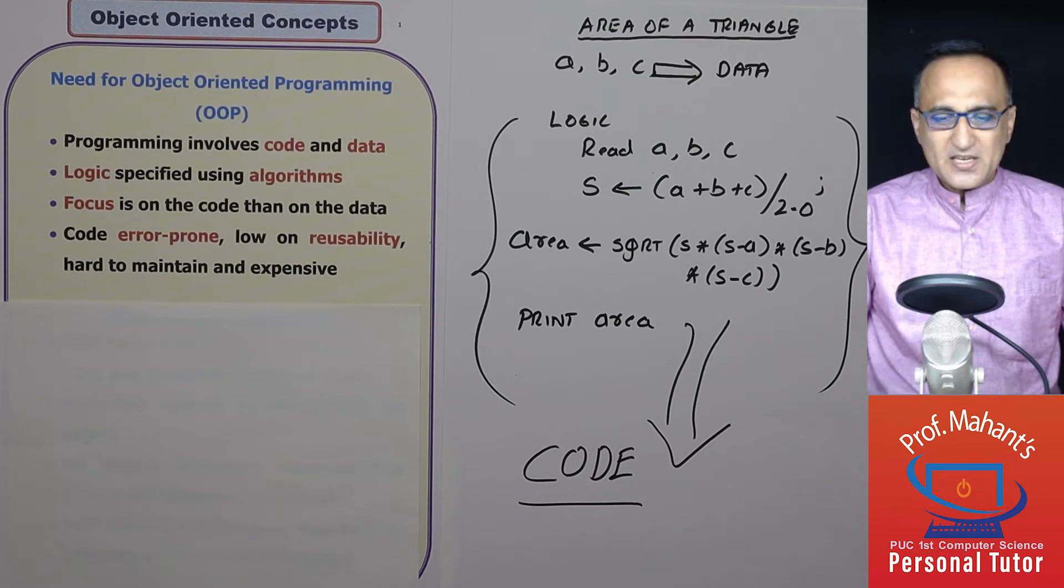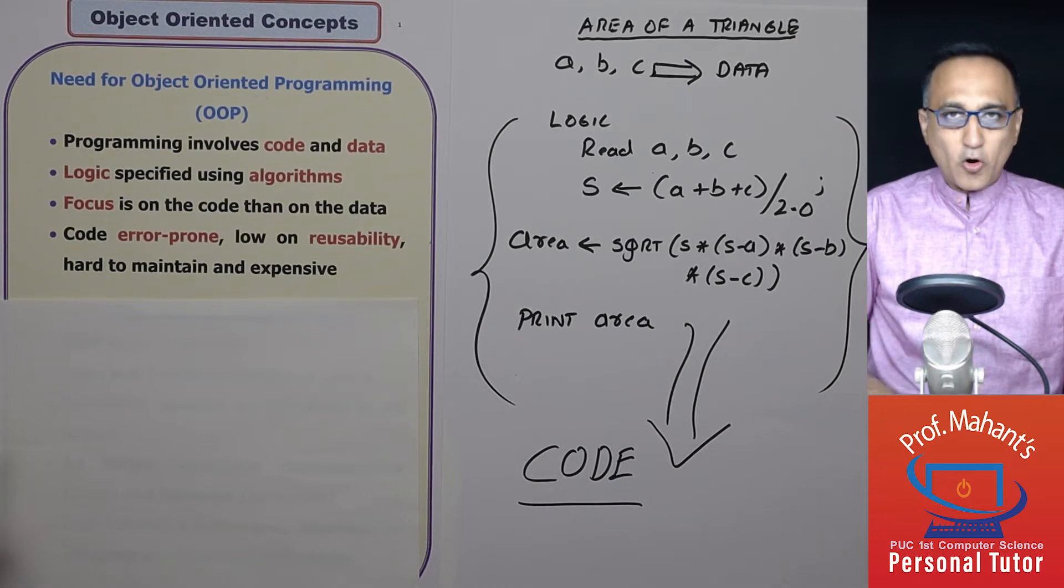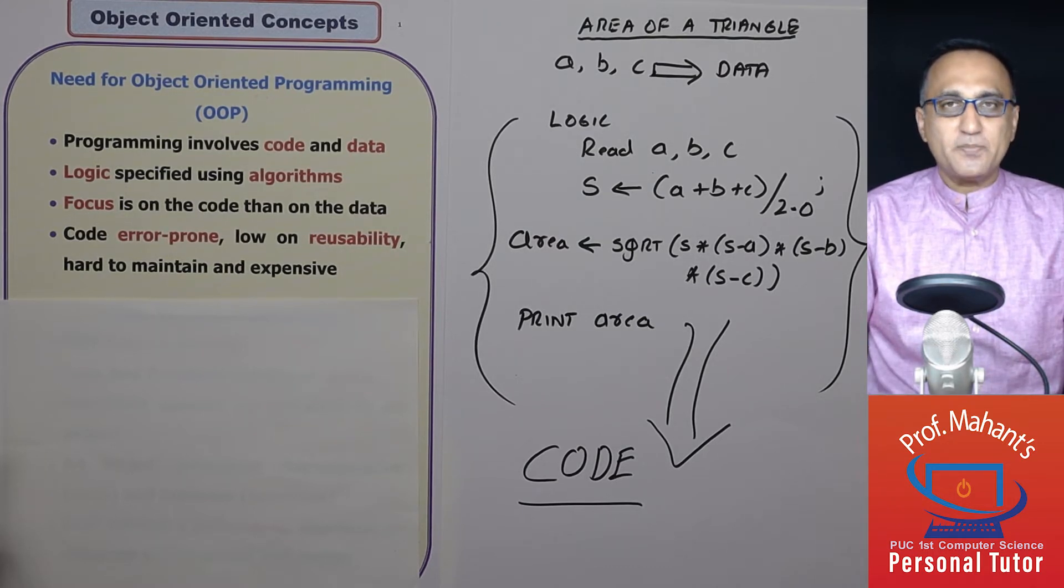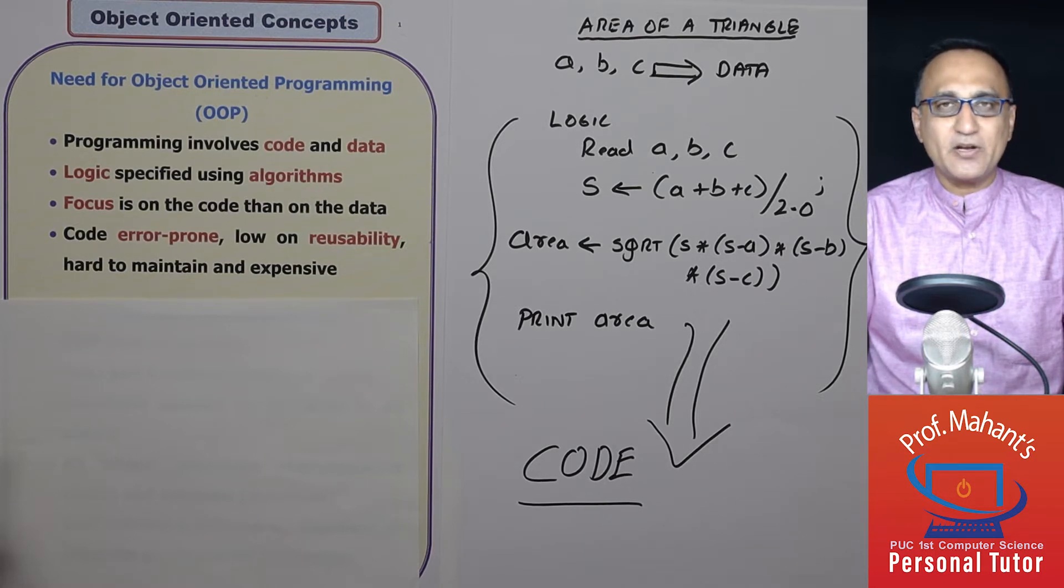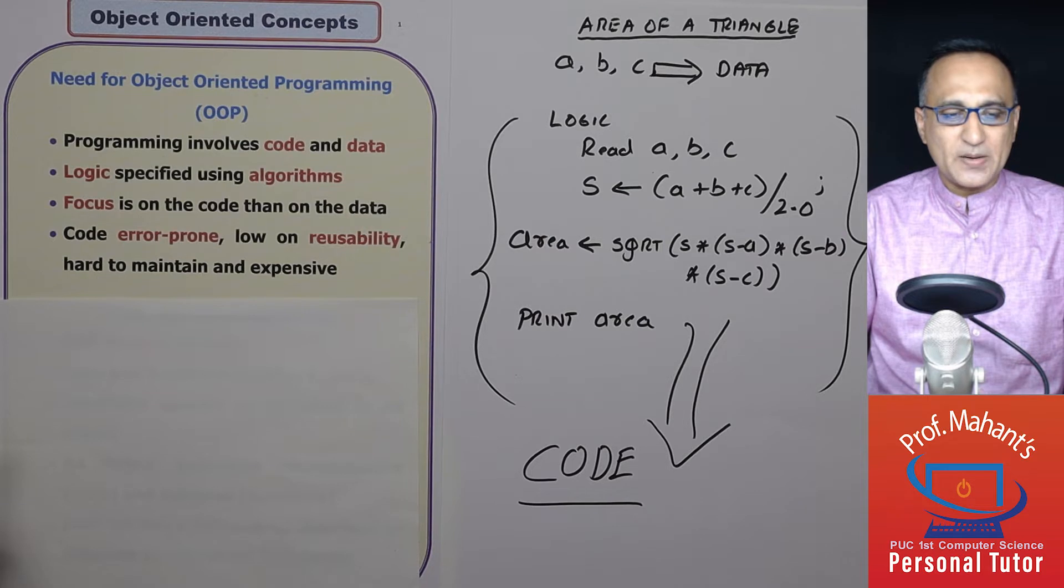The first thing is we need to ask ourselves is why did object-oriented programming come into picture? Object-oriented programming came into picture because there were certain shortcomings of the traditional approach of developing programs, which was using the procedural or structured programming approach.